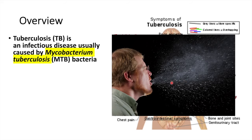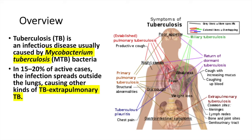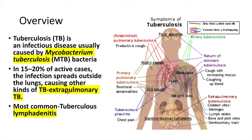Although TB mainly affects the lungs, where it is known as pulmonary tuberculosis, in about 15 to 20% of active cases the infection spreads outside of the lungs — this is known as extrapulmonary tuberculosis. 20 to 40% of extrapulmonary tuberculosis can be attributed to tuberculosis lymphadenitis, making it the most common type of extrapulmonary tuberculosis.